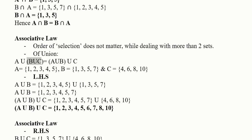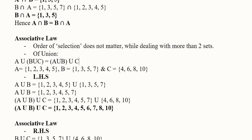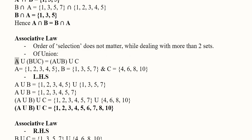In one case we are intersecting B and C first, and then using the result with A. In the other case we intersect A and B first and then use it with C. After we intersect those two sets, we interact the result with the remaining one. The order is not significant for both union and intersection operations.